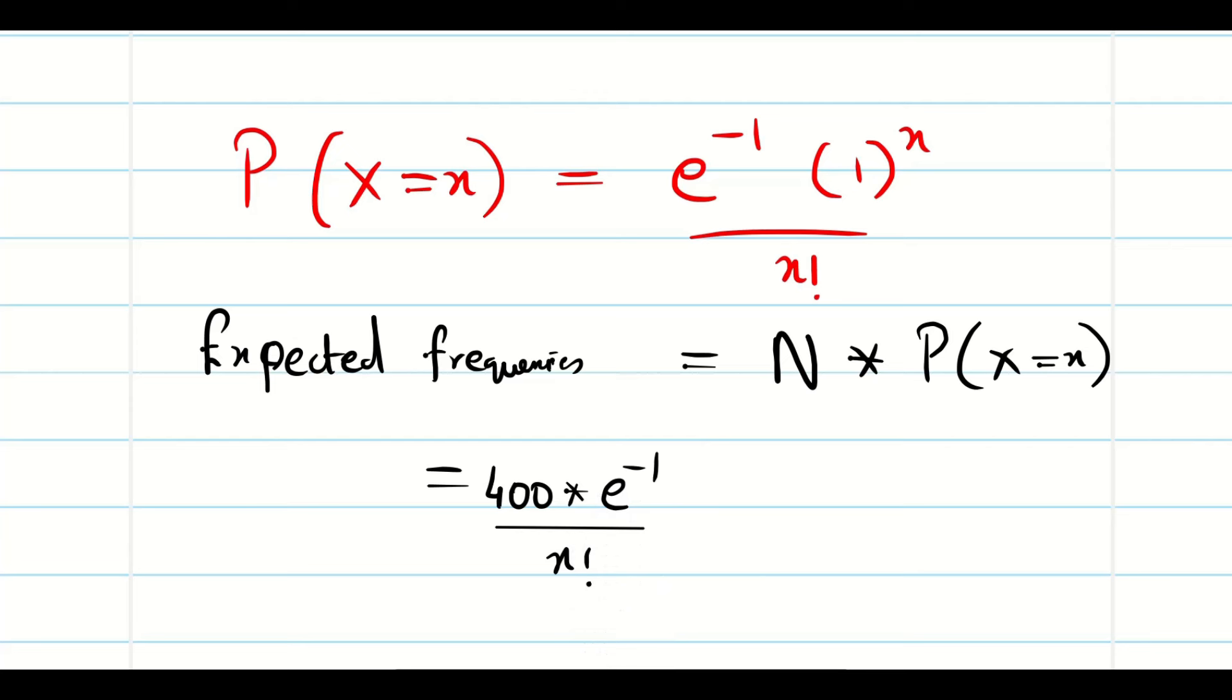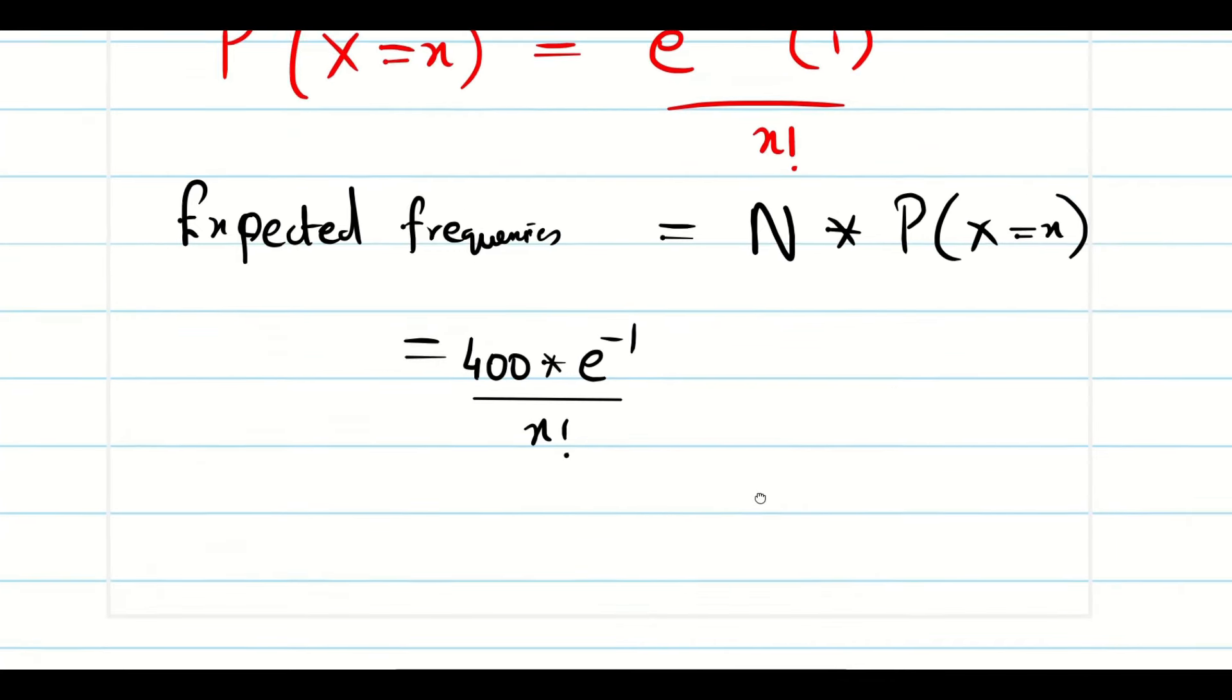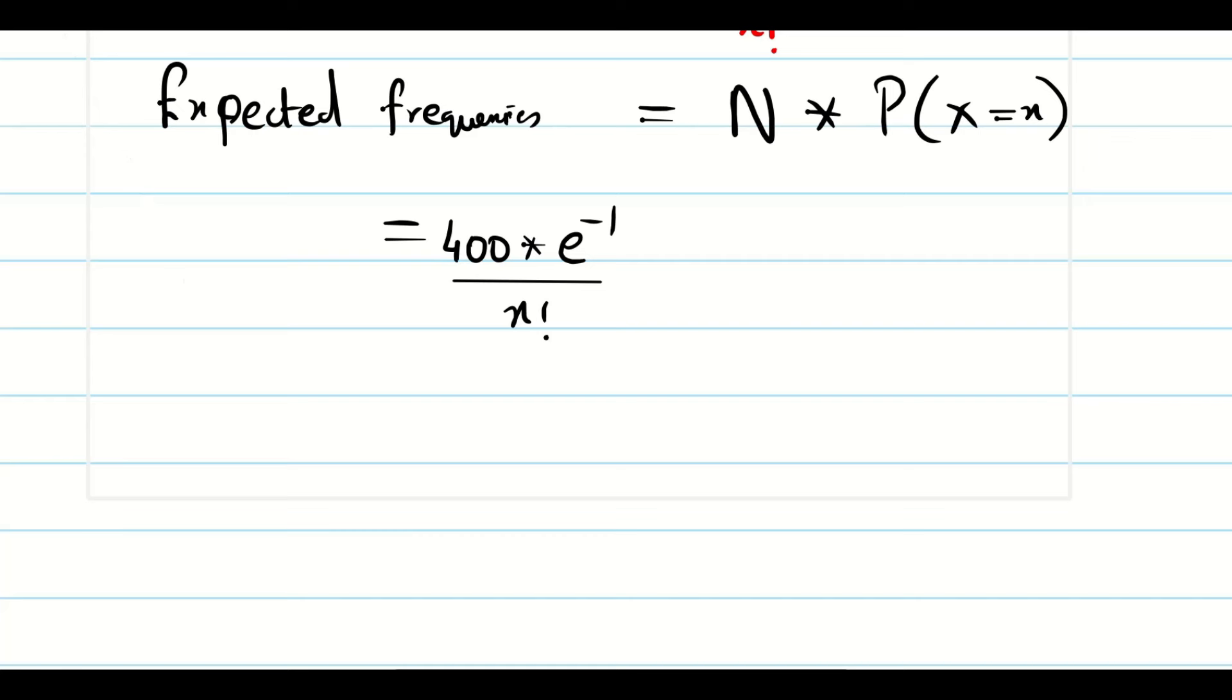So you know the calculator tricks. Pause the video. Enter the correct formula in the calculator. Finish the problem. Again, for your understanding, I am rewriting the data which we enter into the calculator. So 400 into e power minus 1 divided by x factorial. Then as we shall press equal to, we will get the garbage value. Don't worry about it. Now let us finish the problem. Press calc.